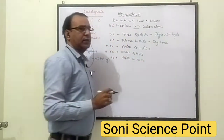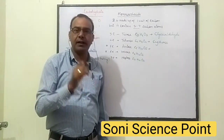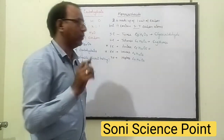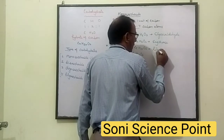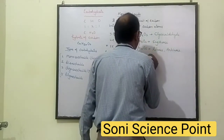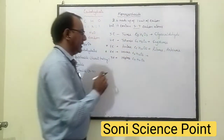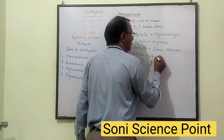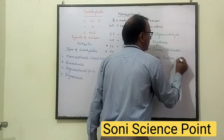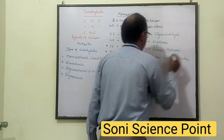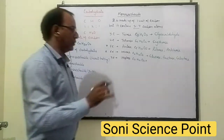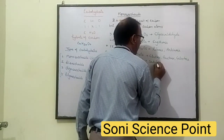Five Carbon molecules are present in Ribose sugar, which makes RNA and DNA. If it is RNA, it is called Ribose; if DNA, it is called Deoxyribose. Another five-carbon sugar is Arabinose. If it contains six Carbon molecules, those are called Glucose, Fructose, and Galactose. Seven carbon molecules give Sedoheptulose.